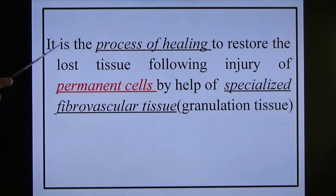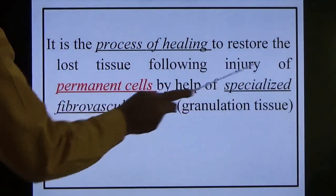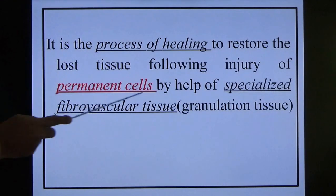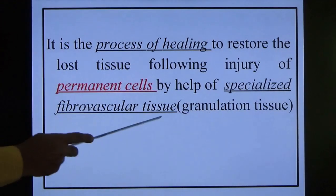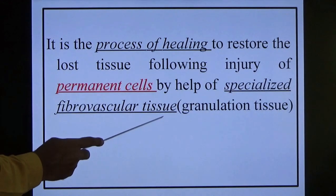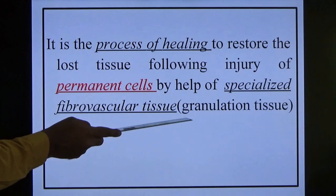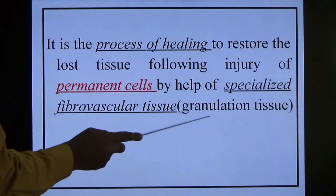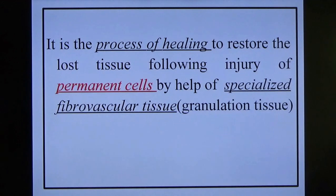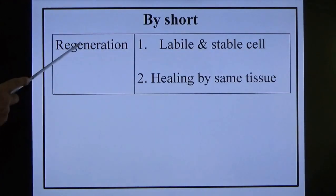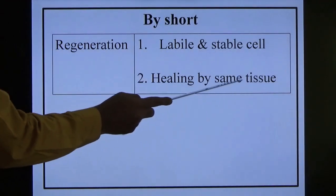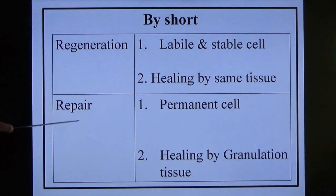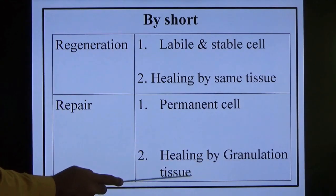What is repair? It is a process of healing to restore lost tissue following injury of permanent cells. Any tissue can be infected and undergo repair, but the end result is not the same tissue — the end result is formation of granulation tissue. Granulation tissue forms only in permanent cells. Simply: regeneration involves labile and stable cells — healing by the same tissue. Repair involves permanent cells — healing by granulation tissue. That is the basic difference between regeneration and repair.